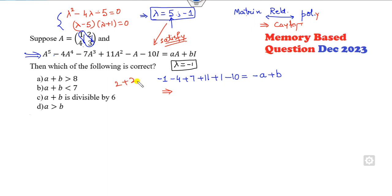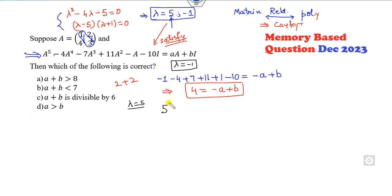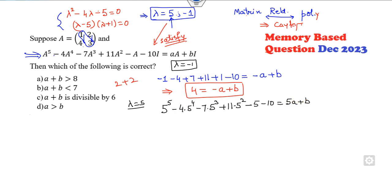Evaluating that gives −1 − 4 − 7 + 11 − 1 − 10 = −12, wait — simplifying: −5 + 7 = 2, plus 12 − 10 = 2, so 4 = −a + b. That is the first equation. Now for the second eigenvalue λ = 5: substitute to get 5⁵ − 4·5⁴ + 7·5³ + 11·5² − 5 − 10 = 5a + b.